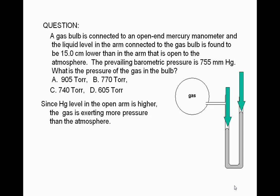Therefore, at this point we can eliminate choices C and D. Both of these choices, 740 and 605 Torr, are less than the barometric pressure, which is given as 755 Torr.